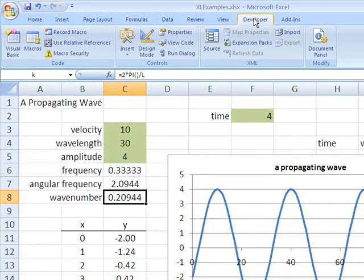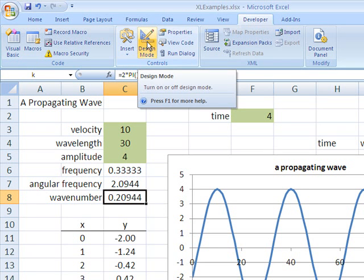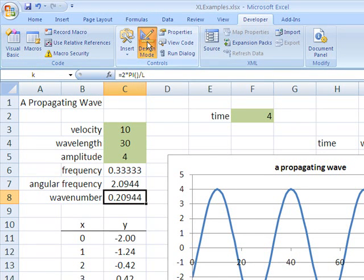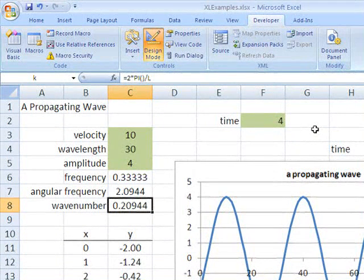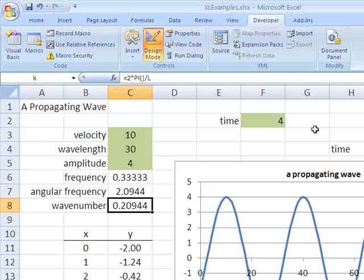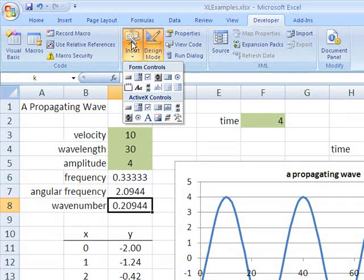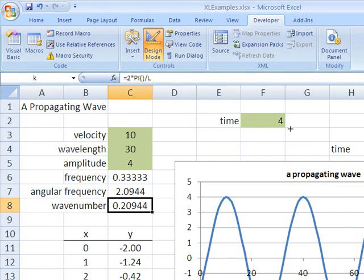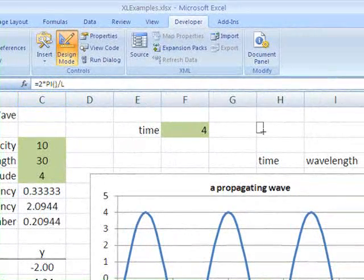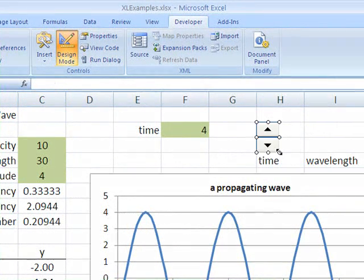Once you have that, click over here under controls to design mode. We're now in design mode where what we're going to be doing is putting in VBA controls and we have this insert command here. You say insert and there's quite a variety of different controls here. I'm not going to go through all of them right now. What I am going to do is show you this one right here, the spin button. Click on that and then come over here and click and drag your spin button.